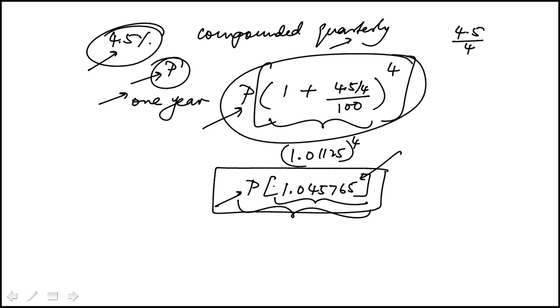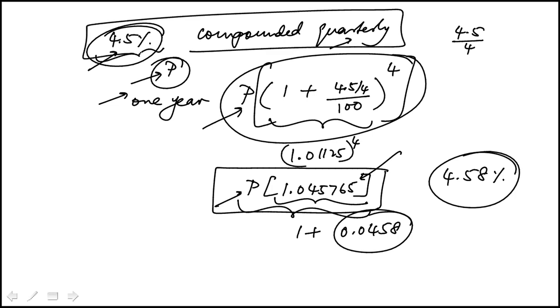One is the whole, and 0.045, you can approximate it, that is equivalent to 4.58%. So that interest, which is compounded quarterly, is equivalent to a single 4.58%, which is what the annual percentage rate for the loan is.